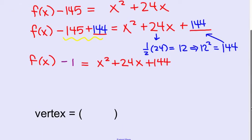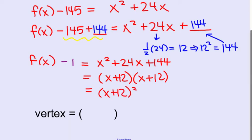We say, what are the factors of 144 that add to 24? Well, that's 12 and 12. It's a perfect square. x plus 12, x plus 12. Or, x plus 12 all squared.